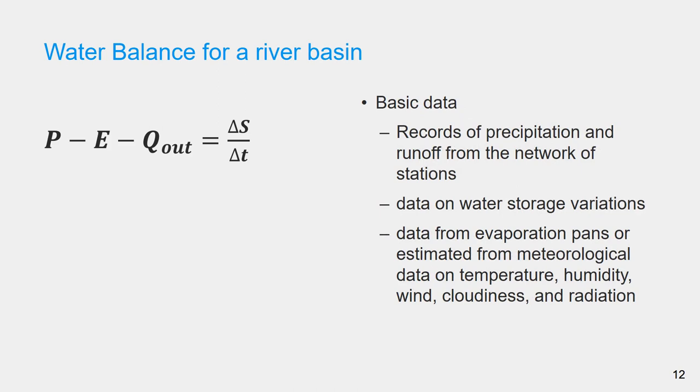Records of precipitation and runoff from network of stations are the basic data for computation of the water balance components of the river basin for long-term periods. To compute the water balance for individual years, seasons, or months, it's necessary in addition to have data on water storage variations in the basin.